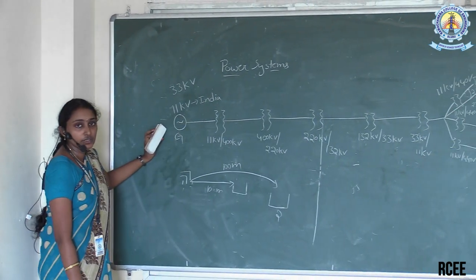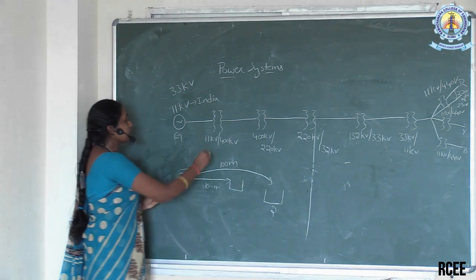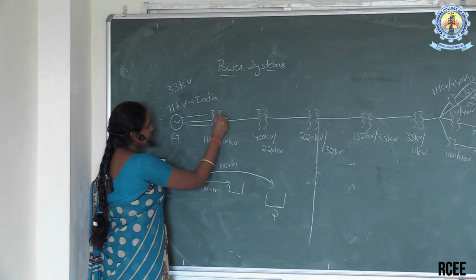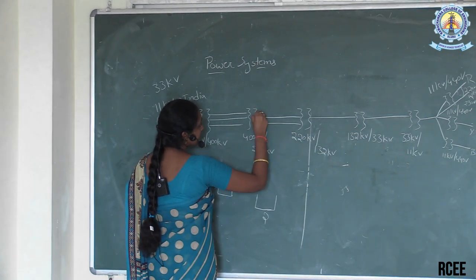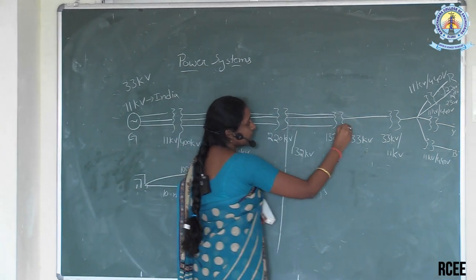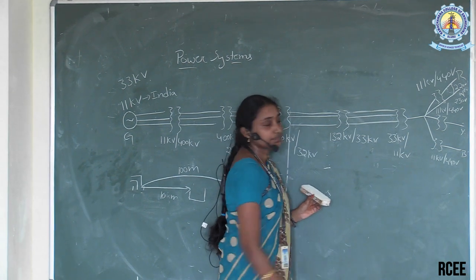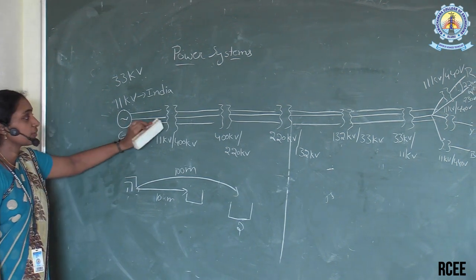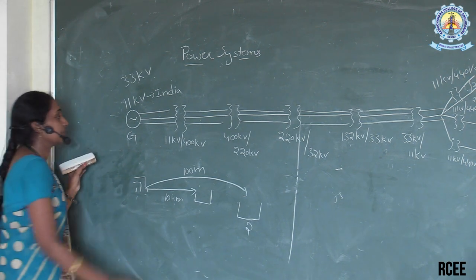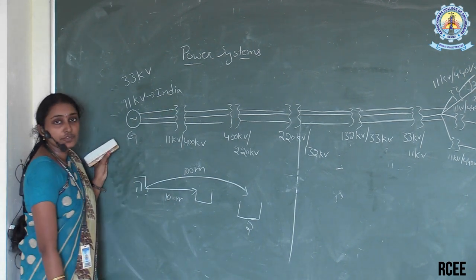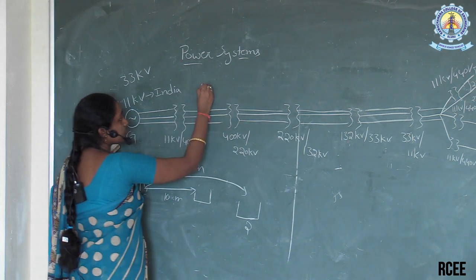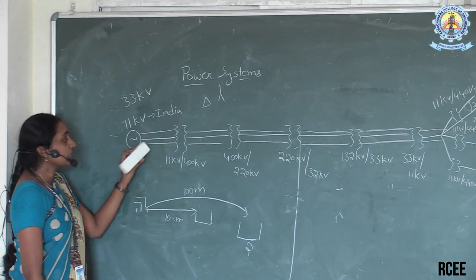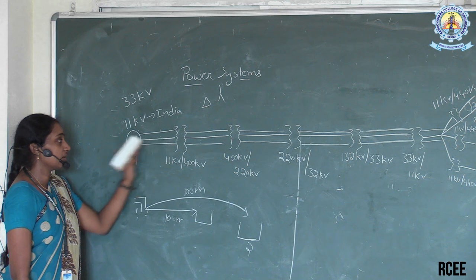At this point, you already know about transformers. Here we are using 11 kV stepped up to 400 kV — this is three-phase supply. The overall system is three-phase, and only at our load ends is it converted into single phase. What type of transformer connection are we using? We have two types of transformers connection-wise: a transformer can be connected in delta connection or star connection.